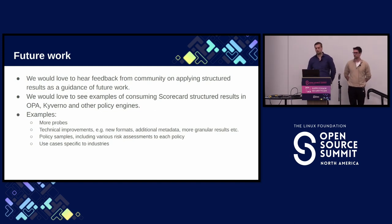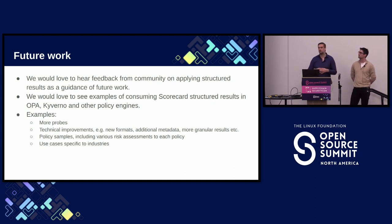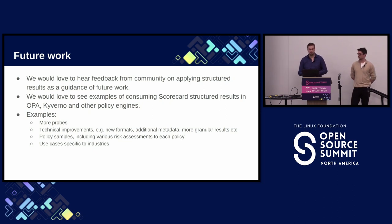While we include these examples, it's important to note that the structured results are not designed for just one use case like CI. They were designed to make it very easy to customize your own use cases if you want to know about supply chain risk in your dependency tree. We encourage everyone in the community to start using this, testing it out, and giving feedback on the Scorecard repository and in Slack. The maintainers are very active, so please get involved.